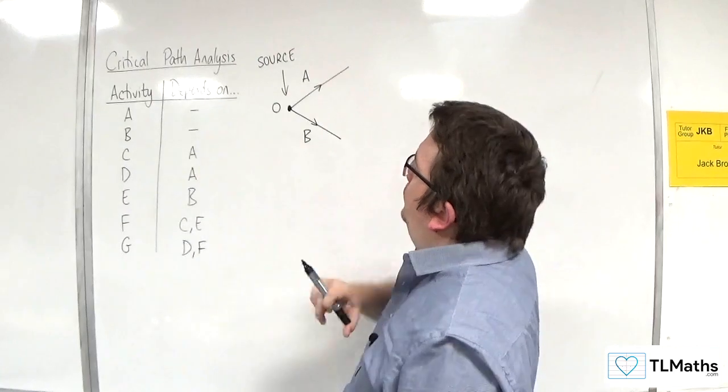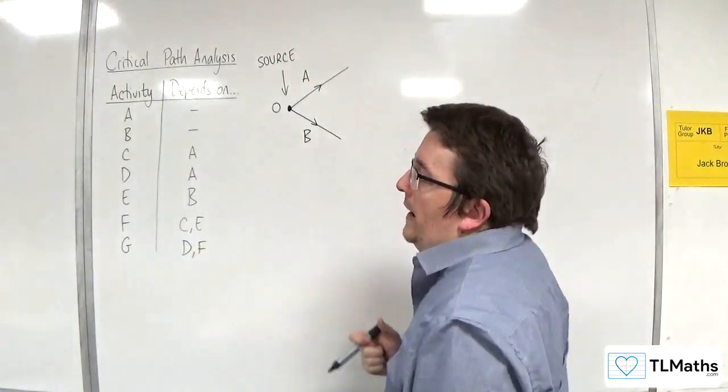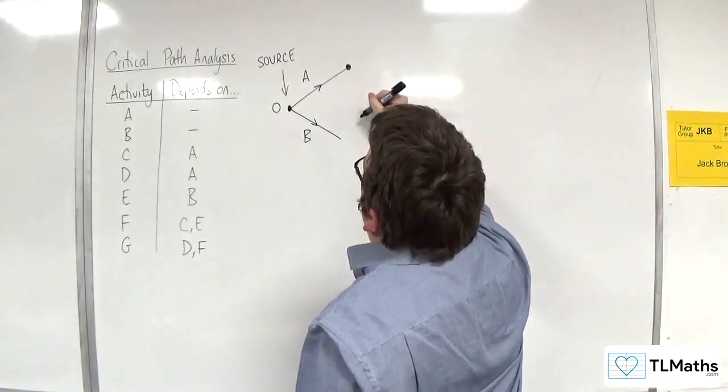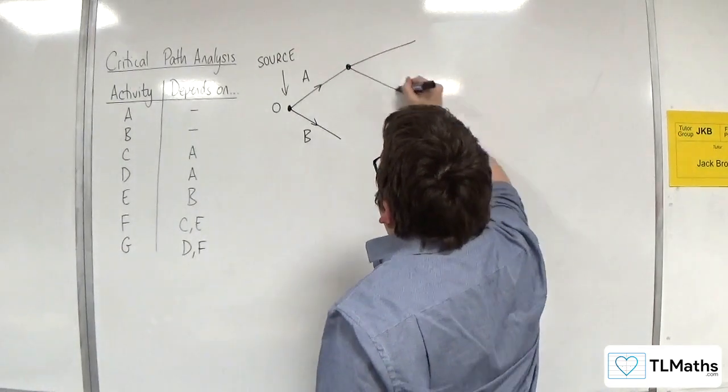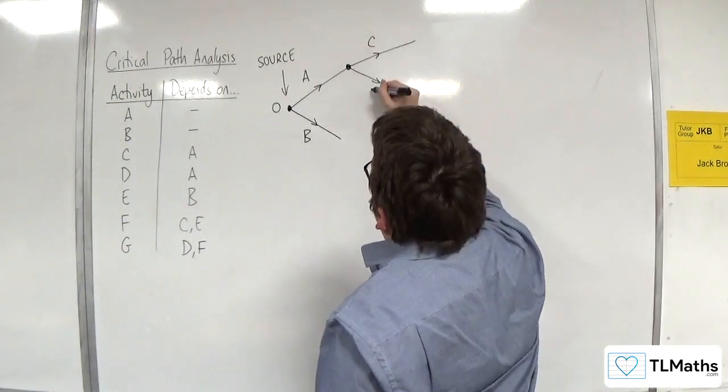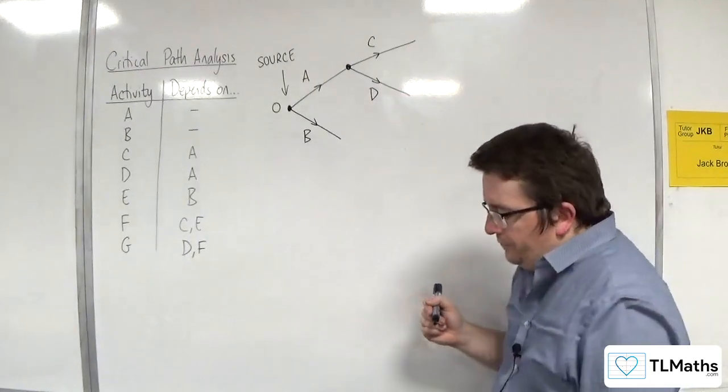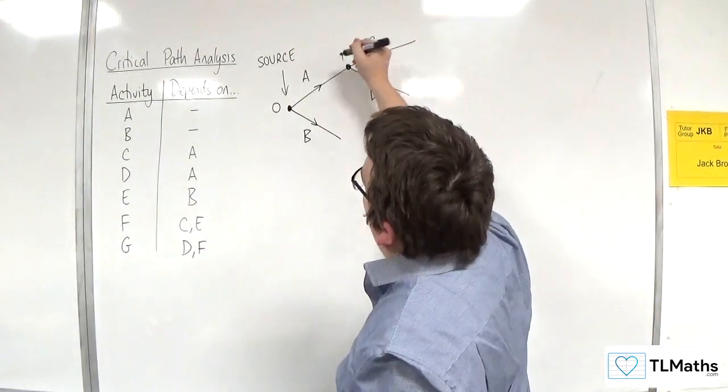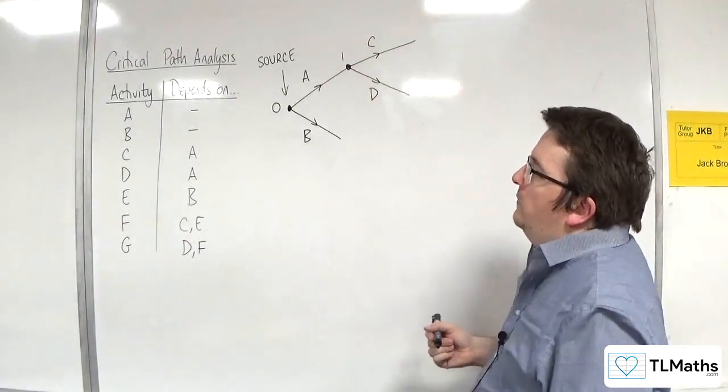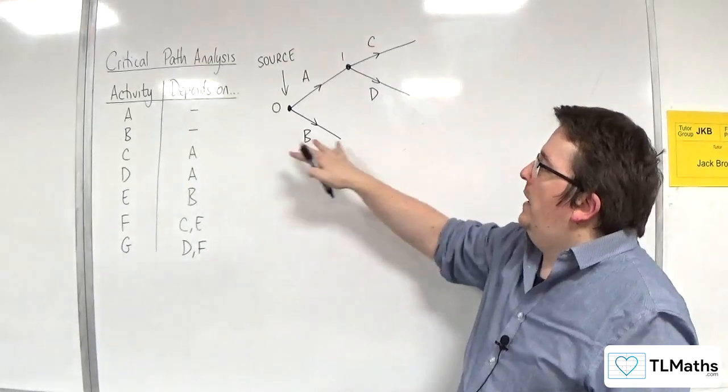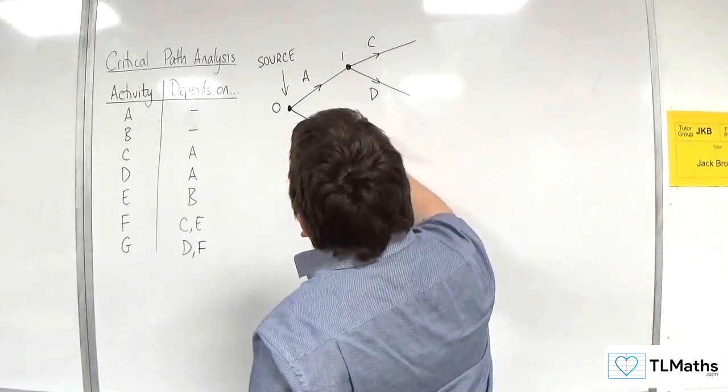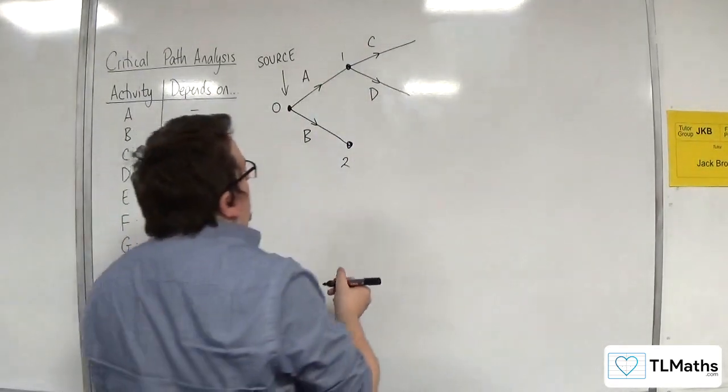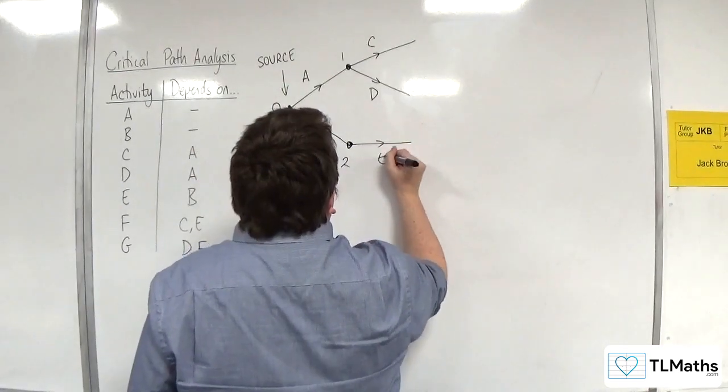C depends on A. And D depends on A as well. So, from this point here, you might go, okay, well, I need C and D. Like so. Now, the next one, E depends on B. Oh, I haven't labelled that one. So, I'll label that with 1, because that was the next one that I've reached. So, E depends on B. I'm going to have another node here. I'm going to label that number 2. And E is coming out of there.